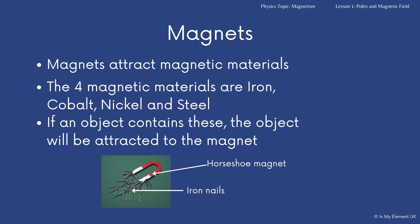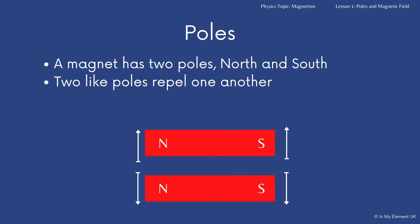What you also need to be aware of is the poles. Magnets have two poles — north and south.